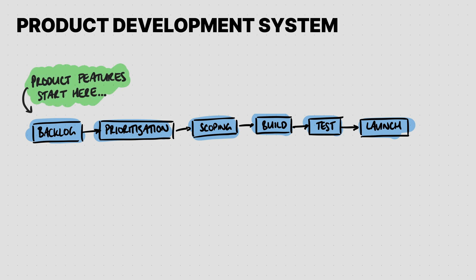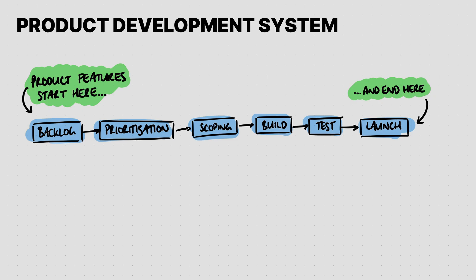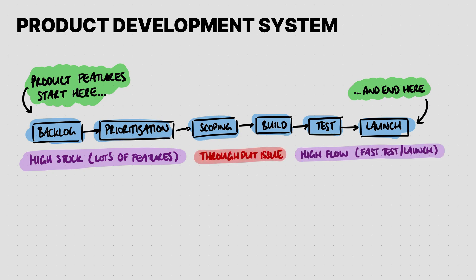Product features begin in the backlog, work their way through the system, and come out at the end as finished, launched product features. We need to look at the throughput of product features in our system — not in a technical sense, but just eyeballing the system to see if there are any potential bottlenecks. We might find plenty of features in the backlog (stock is high) and fast testing (flow is high), but there's a throughput problem at scoping and build: requirements aren't clear enough, so developers repeatedly have to ask for more information, which slows down development. The lesson: the problem is rarely exactly where the symptoms appear — it often happens upstream, where the bottleneck is.